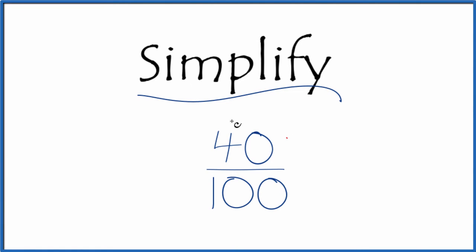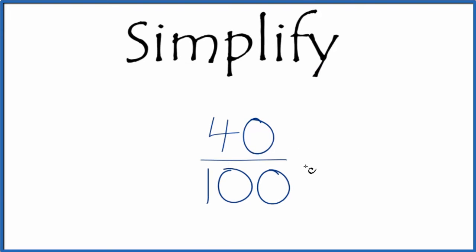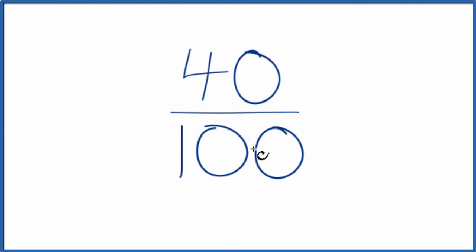Let's simplify the fraction 40 100ths. And what we're trying to do, we're trying to find another fraction that's equivalent to 40 over 100, has the same value, it's just that we've simplified it to lowest terms.